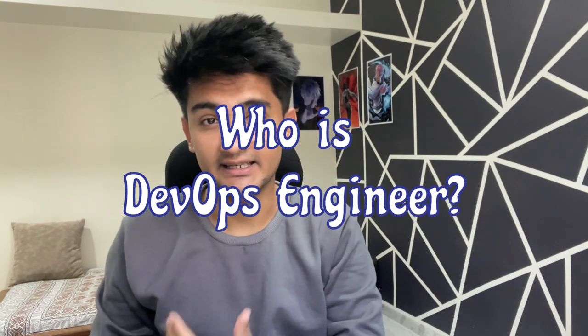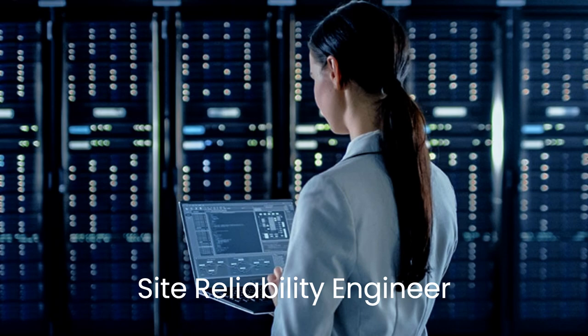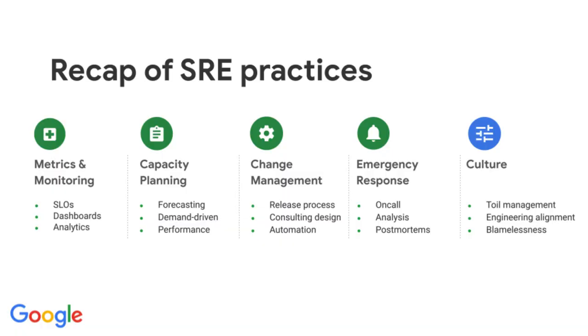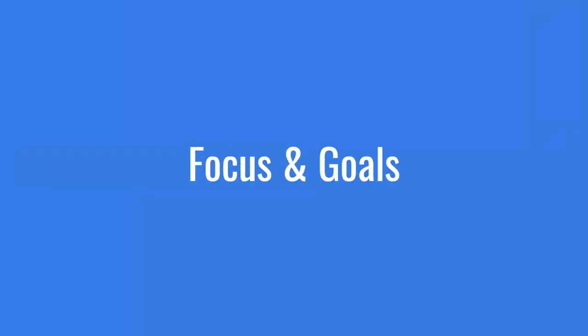Starting with definitions: a DevOps engineer is a person who uses software development and IT operations skills to automate the process of building, deploying, and managing software applications. An SRE, or Site Reliability Engineer, is a term introduced by Google in the late 2000s to describe practices and principles that helped Google maintain reliability, availability, and scalability of their massive infrastructure. An SRE is a person responsible for ensuring scalability, reliability, and availability of large, complex infrastructures using a combination of software engineering skills and IT operations.